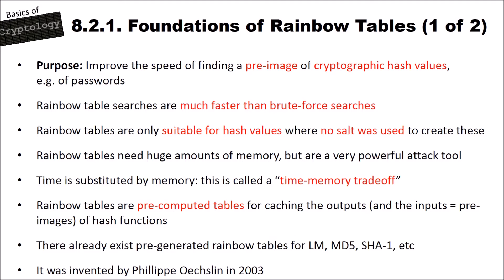Rainbow table searches are much faster than brute force searches. Rainbow tables are only suitable for hash functions where no salt was used. If you don't know what a salt is, you should have a look at the passwords video. Rainbow tables need a huge amount of memory but they are a very powerful attack tool, because time is substituted by memory — this is called a time-memory trade-off. Rainbow tables are pre-computed tables or data structures for caching the outputs and inputs, which are our pre-images or passwords of hash functions.